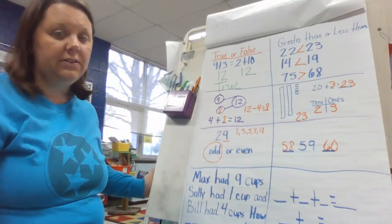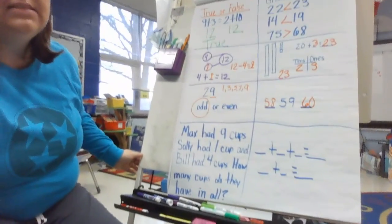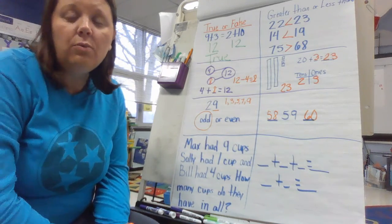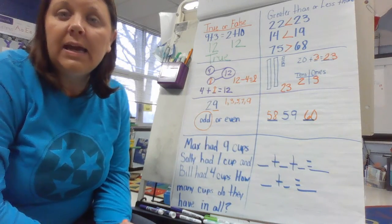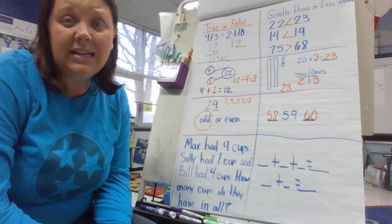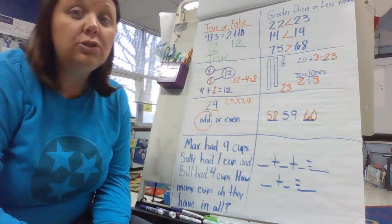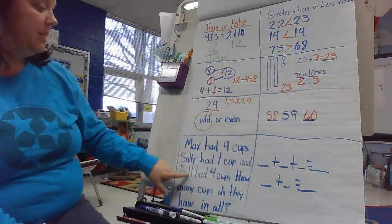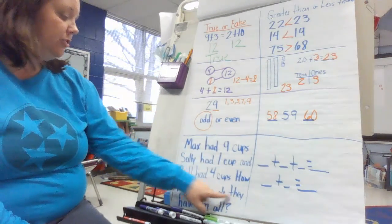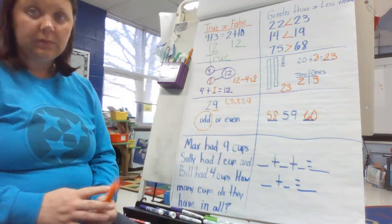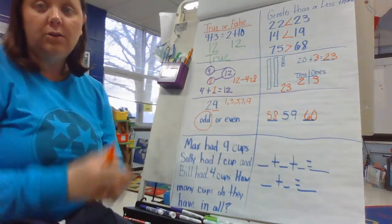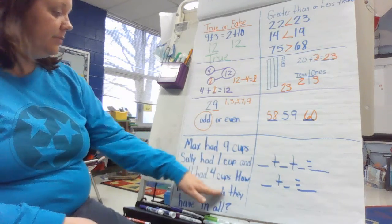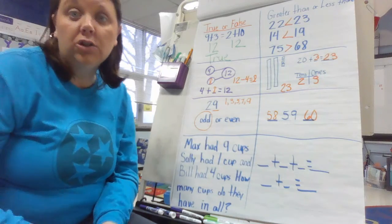And the last problem we have today is a word problem. And actually, it's a word problem that contains the associative property. So if you remember before we left for Christmas break, we started talking about adding three numbers together. And what we talked about is the easiest thing to do is to find a double or a 10 in the problem, if there is one, and start from there. So let's read our problem. Let's read the word problem. Max had nine cups. Sally had one cup. And Bill had four cups. How many cups do they have in all?